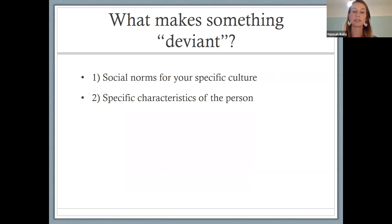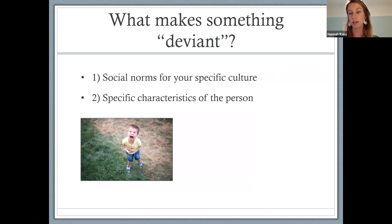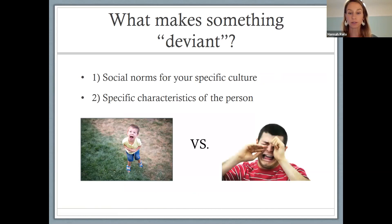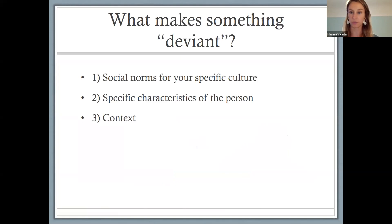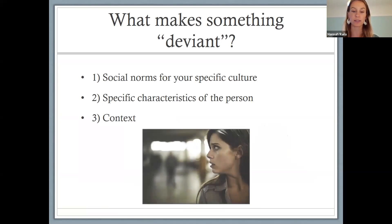Another way we know if something is deviant is by considering the specific characteristics of the person. For example, if you have a three-year-old throwing a temper tantrum, that's not necessarily deviant for that age. However, if you have a 30-year-old throwing a temper tantrum, that is more deviant and might suggest mental illness. The third consideration for deviance is context. A soldier overseas at war who is constantly looking over their shoulder and feeling vigilant — in that context that would not be deviant; it's actually pretty adaptive. But if they come home and are back taking college courses and still feeling like they're about to get attacked, that would be deviant behavior in the context of being back at college.